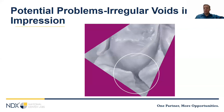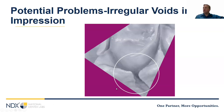Regular voids in the impression can be caused by an underfilled tray, loading too late, inserting the tray too rapidly, or repositioning the tray after seating. Once the tray is in place, hold it — don't shift it for better adaptation, as this leads to voids. A lot of times you'll see these voids in non-critical areas. For instance, if you're doing an impression on tooth number 3 and you see a void in the mesial of number 5, as long as it doesn't affect the bite, it'll be okay.